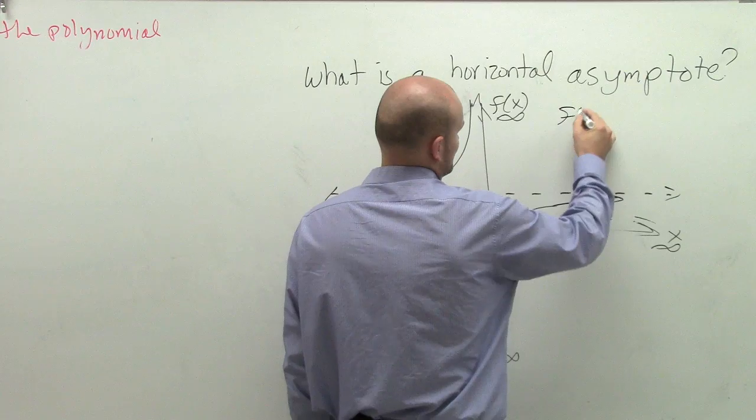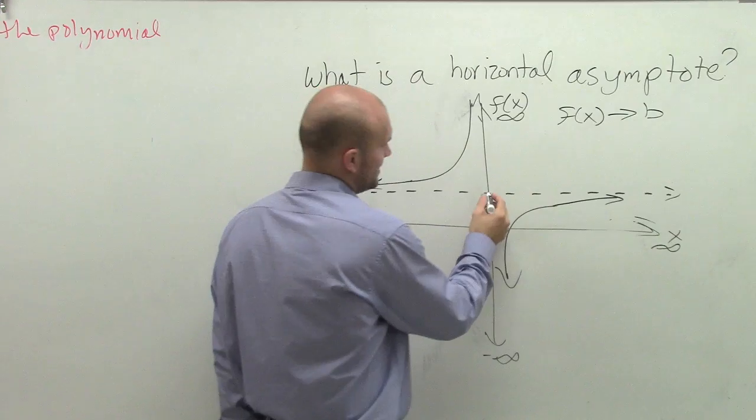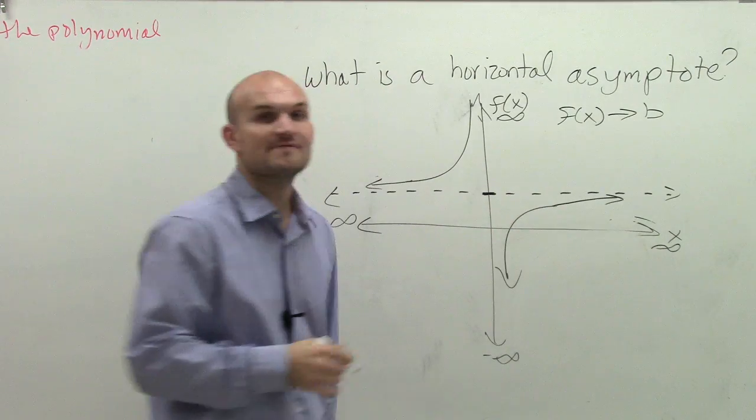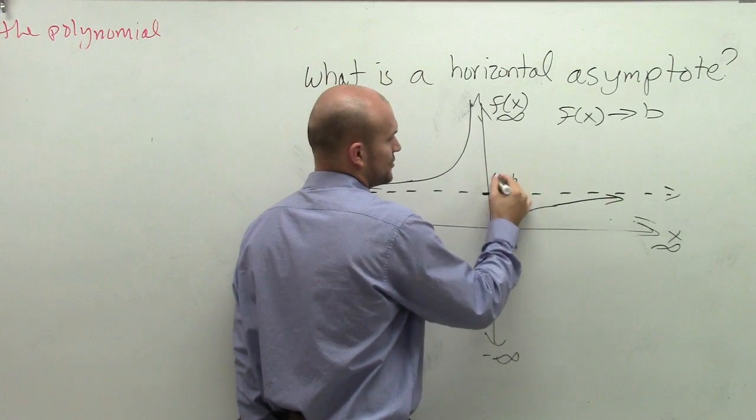So what a horizontal asymptote says is, as f of x approaches b. Now, what is b? b is the y value, or the f of x value, of your function. So we could say this point is at 0, b.